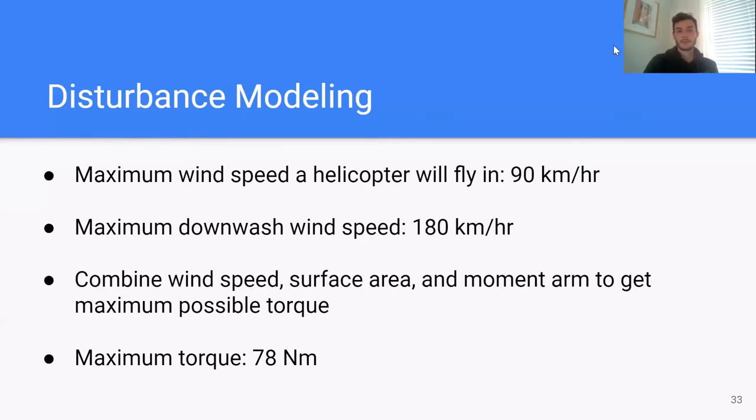To model the disturbance, we did some research on the maximum wind speed a helicopter will fly in, as well as the maximum downwash wind speed the stretcher will experience. Combining this with the stretcher surface area and moment arm allow us to calculate the maximum possible torque seen by the stretcher. The details of this calculation can be found in our system dynamics document, but at the end of the day we don't expect to see more than 78 Nm of torque exerted on the stretcher.